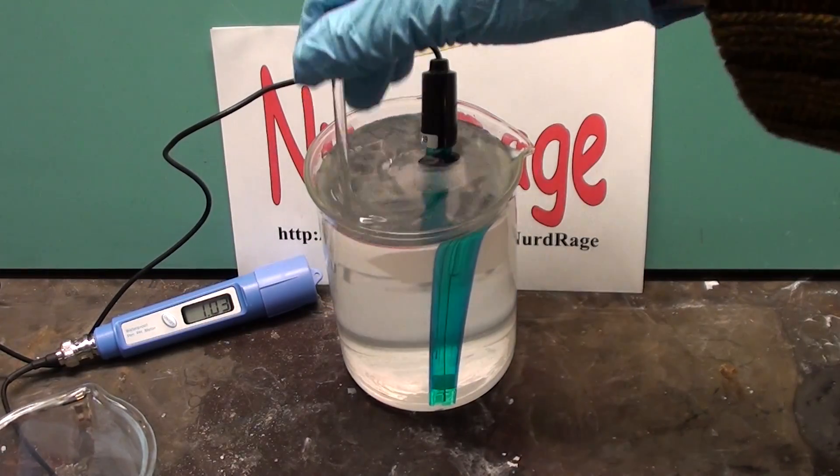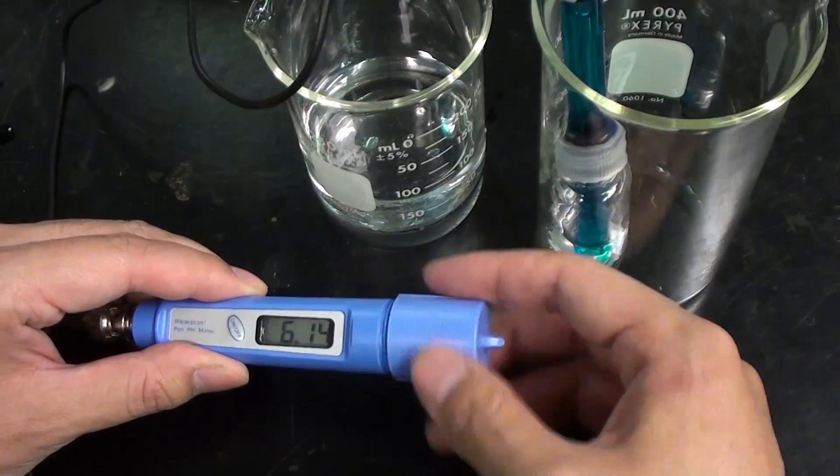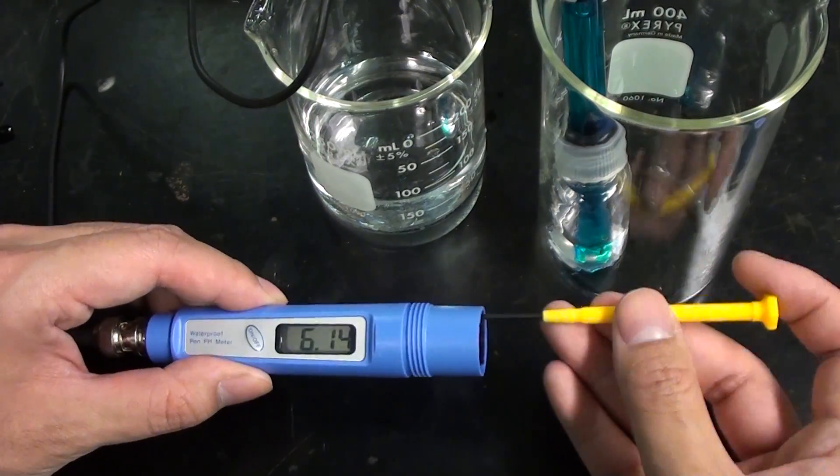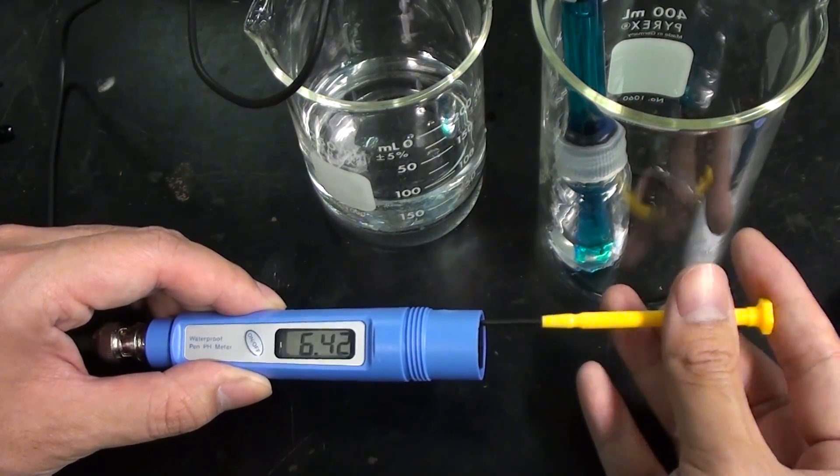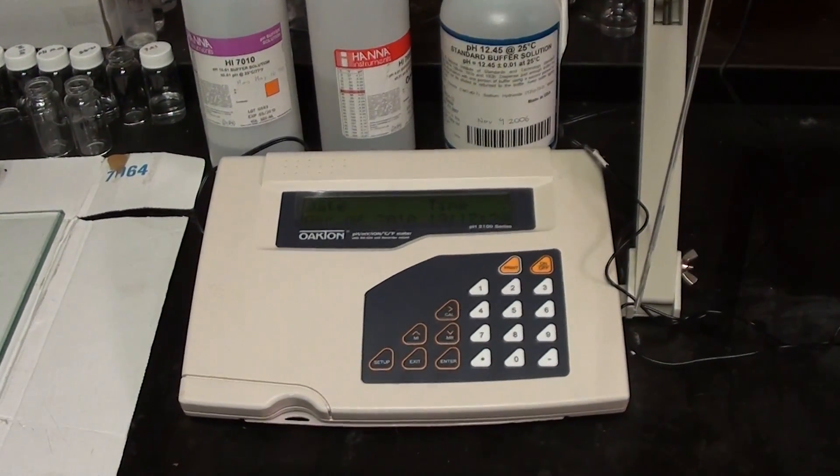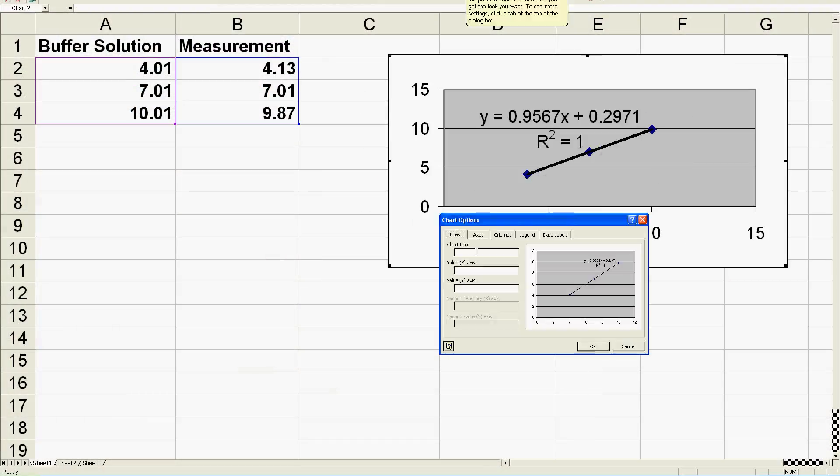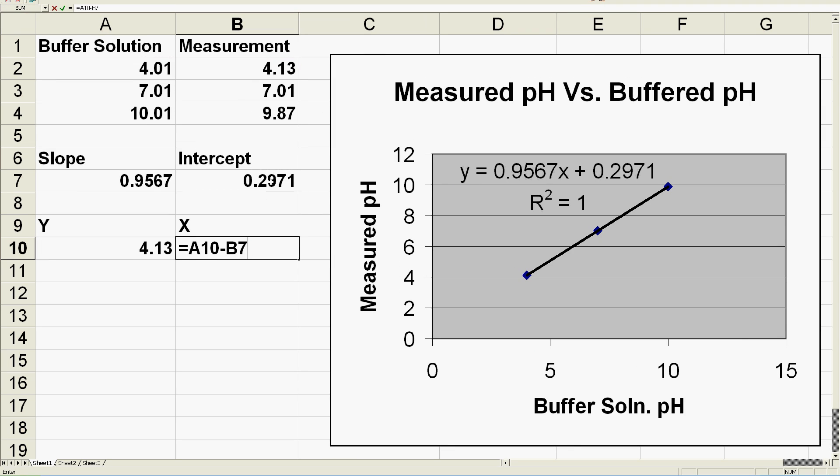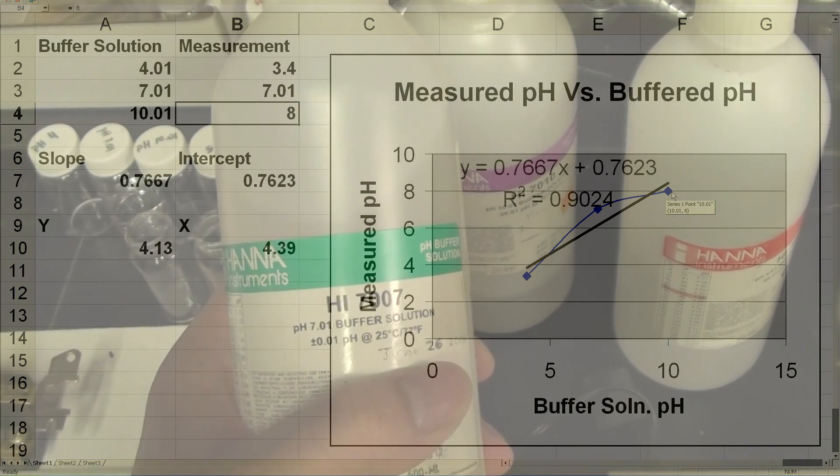For a lot of reactions this tiny error isn't an issue, and calibrating to the point closest to the expected pH of your reaction is usually enough. On a more advanced instrument, the onboard computer would automatically compensate. But to save money, we're just going to use your personal computer along with a spreadsheet and some math.